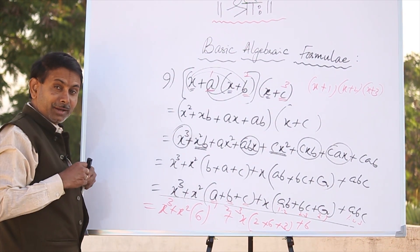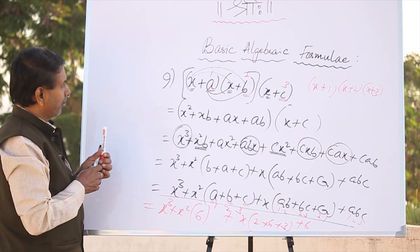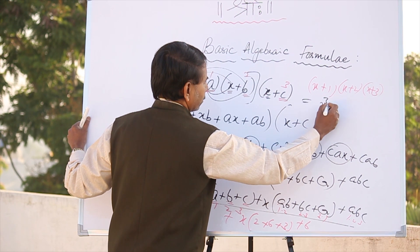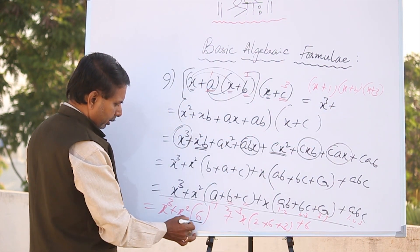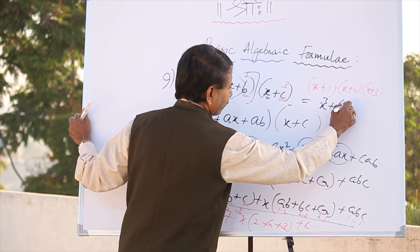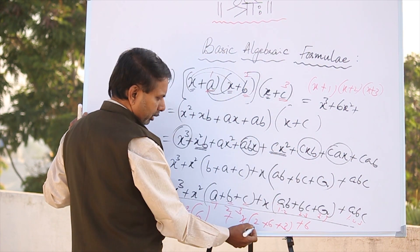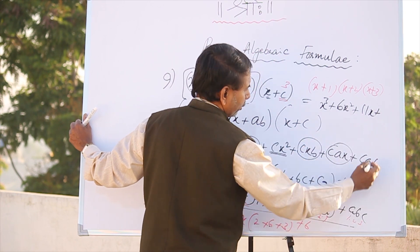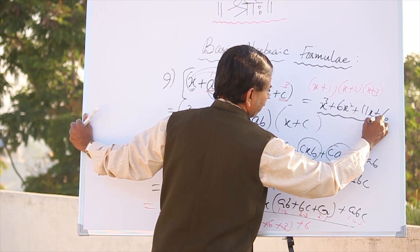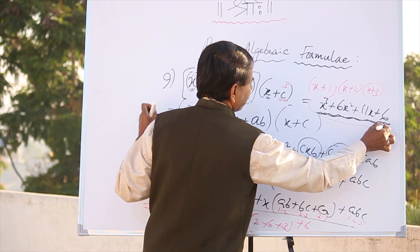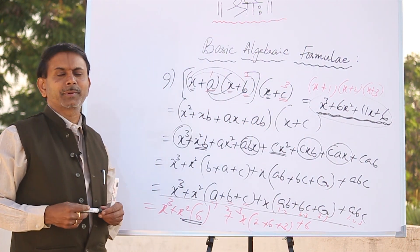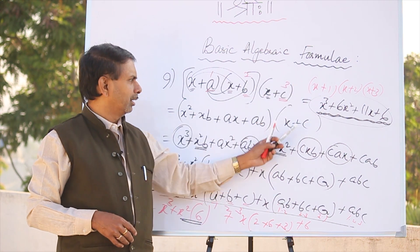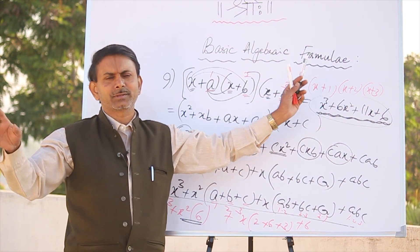The final formula is — come on, tell me — x cube. Plus 6X square. Plus — 2 plus 6 is 8, plus 3 is 11X. Plus 1 into 2 into 3 is 6. This is your final answer.